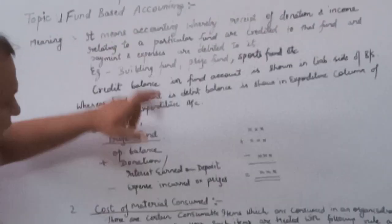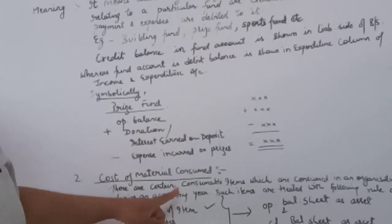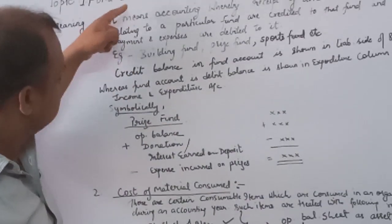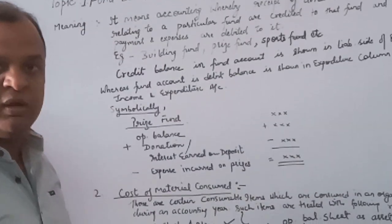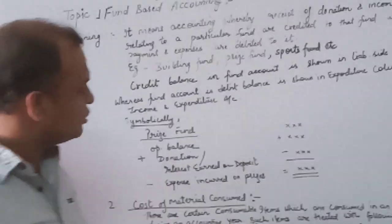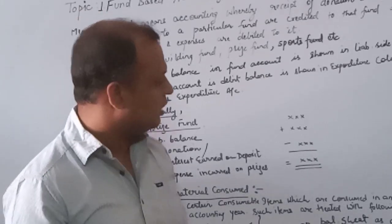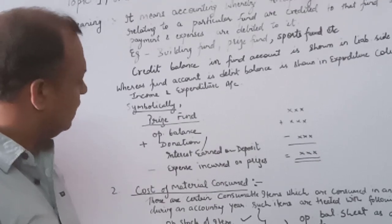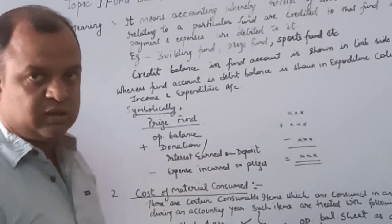With the help of these two topics, fund based accounting and material consumed, we will further practice one of the questions which will relate us how fund based accounting and material consumed will be calculated in a miscellaneous question for NPO accounting. This is all for today. We will continue with the question based on fund based accounting and material consumed in the next class.